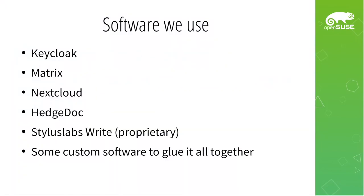The software we settled on is: Keycloak for authentication, Matrix for chat, Nextcloud for file storage, and HedgeDoc and Stylus Labs Write for collaborative writing — be it typing or handwriting. We also wrote some custom software to glue it all together and make the user experience nice.